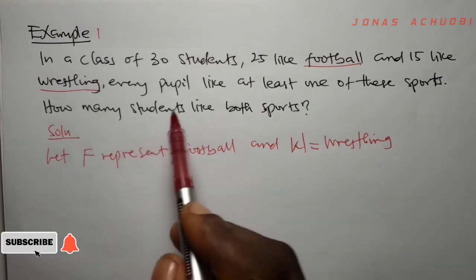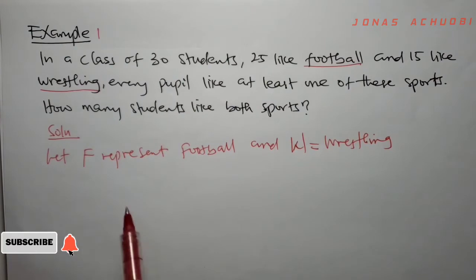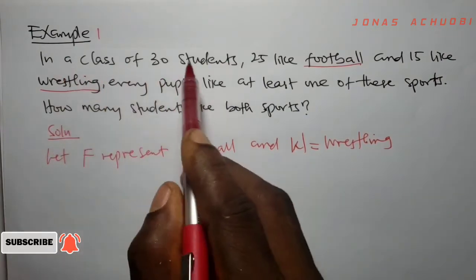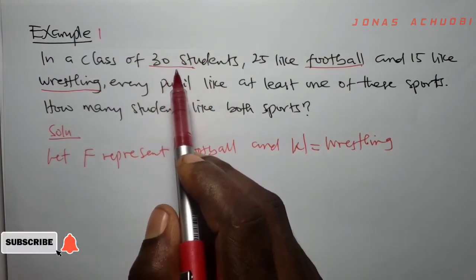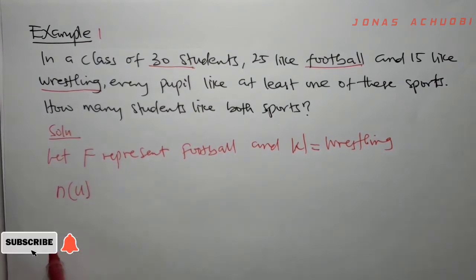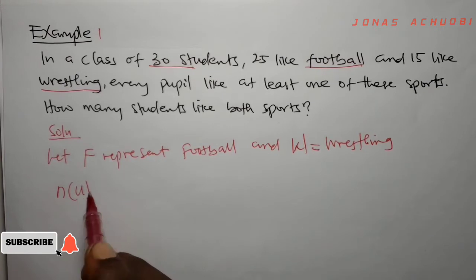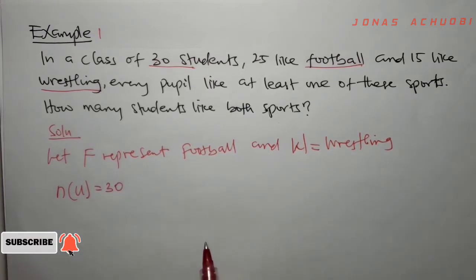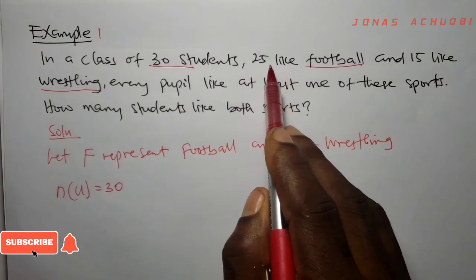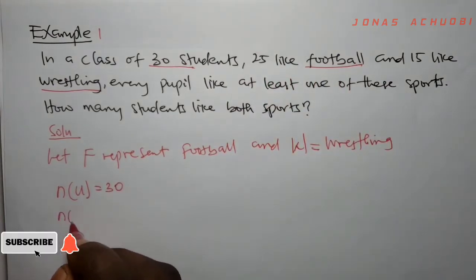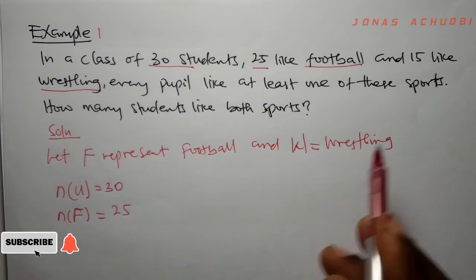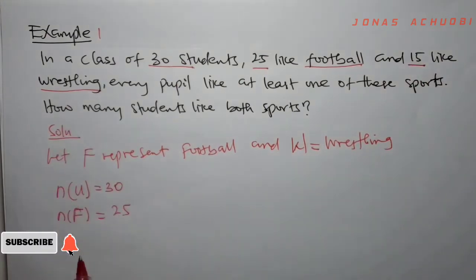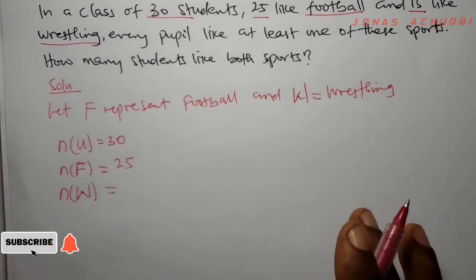Next we extract the parameters from the problem. The entire class has 30 students, so the universal set N(U) equals 30. We are told 25 students like football, so N(F) = 25. And 15 like wrestling, so N(W) = 15.